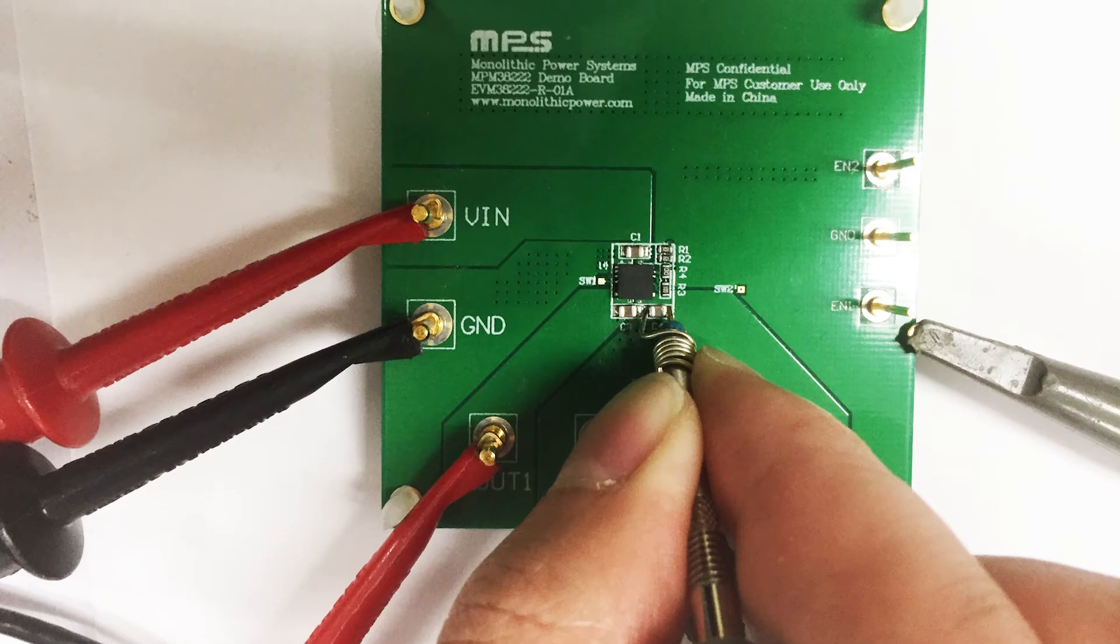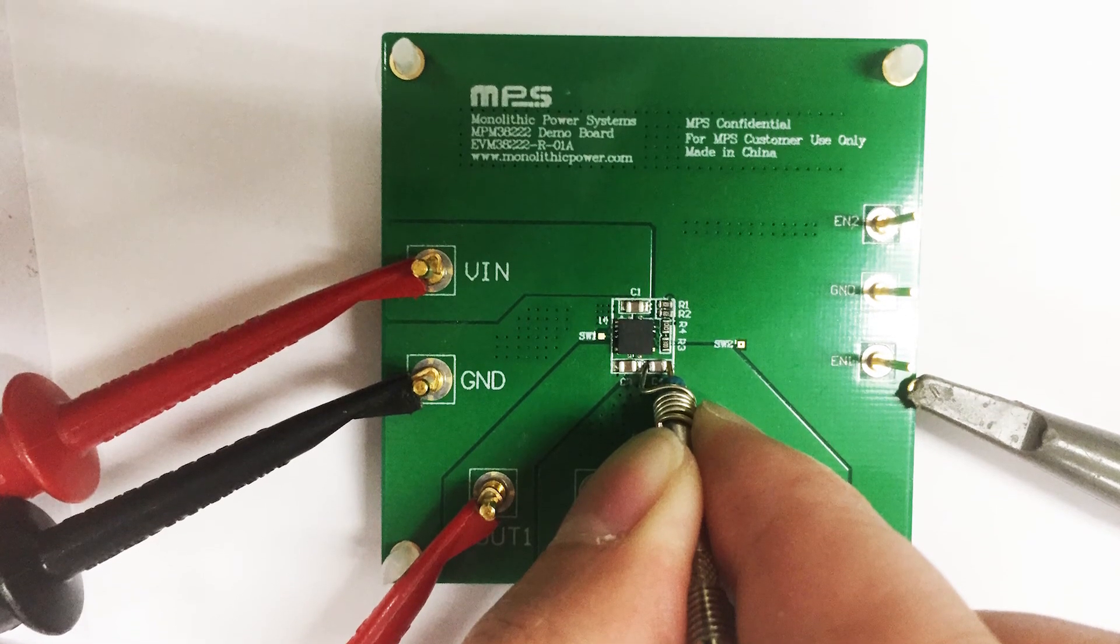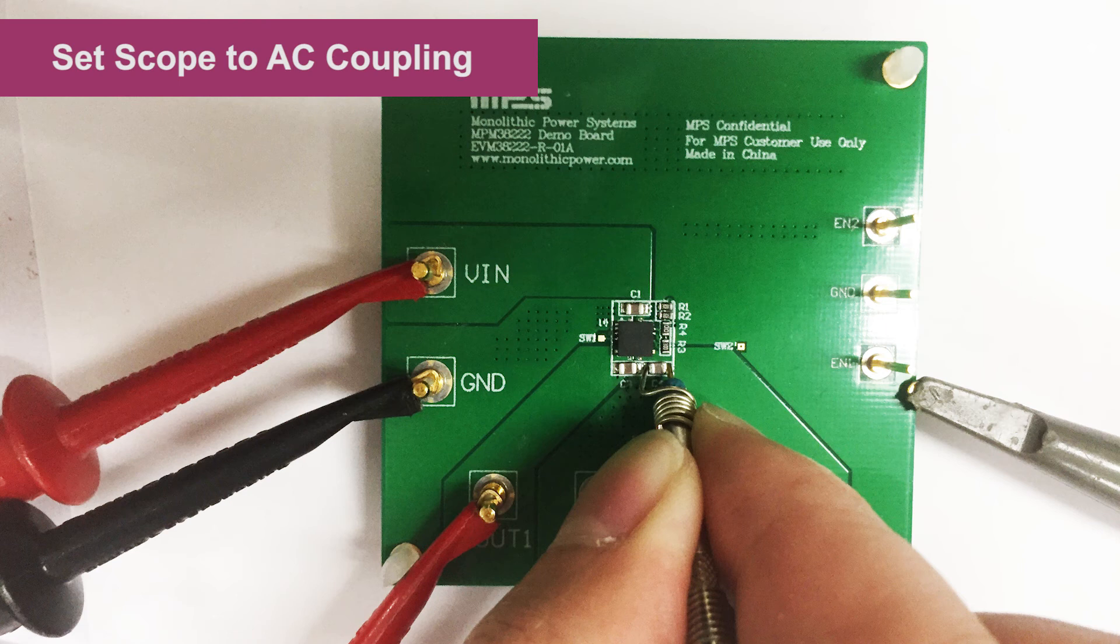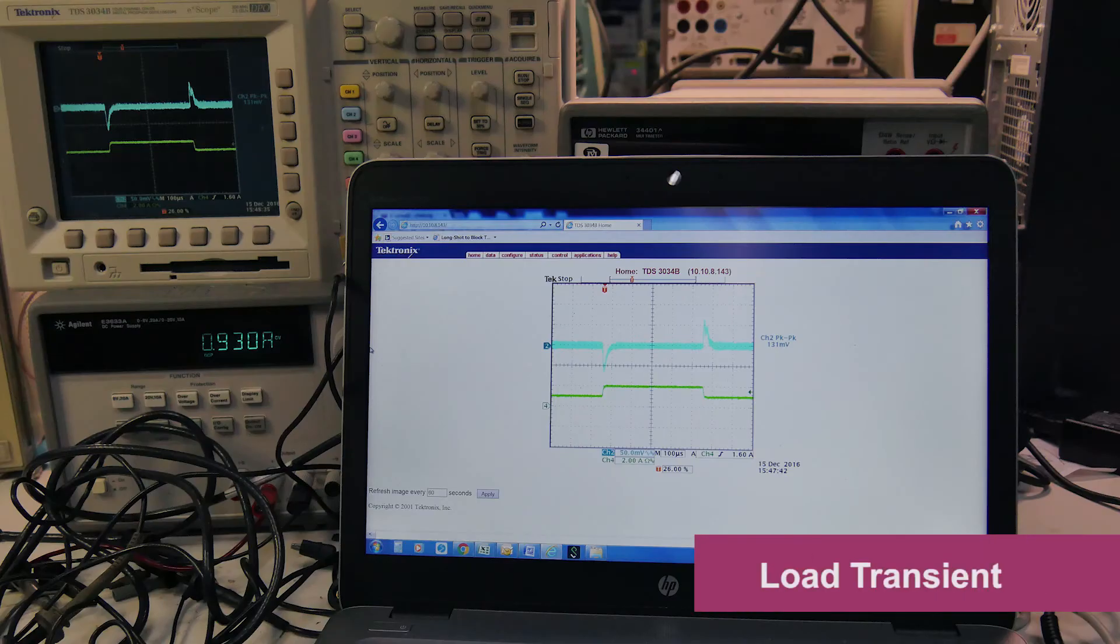Then connect the scope probe to the output ceramic capacitor. Make sure the scope is set to AC coupling, and then check the transient waveform on the scope.